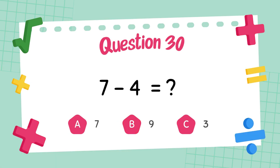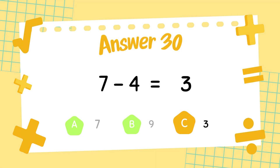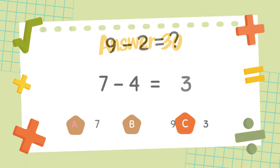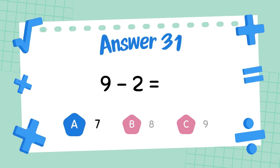What is 7 minus 4? What is 9 minus 2? The answer is 7.